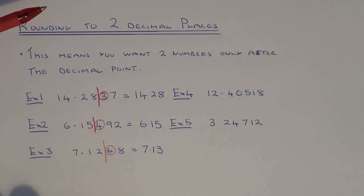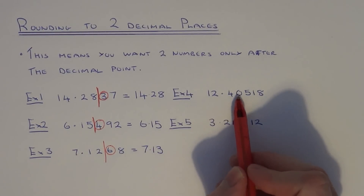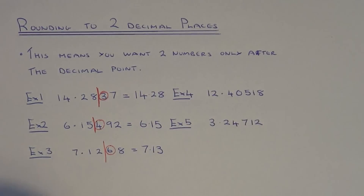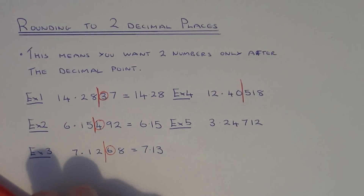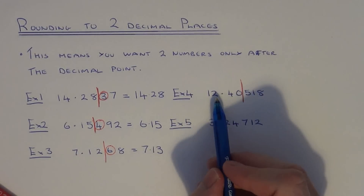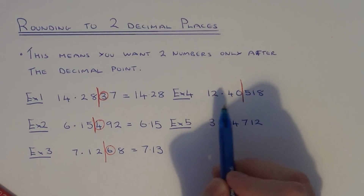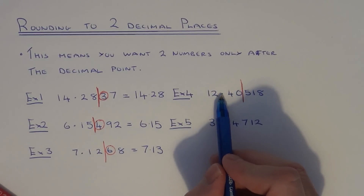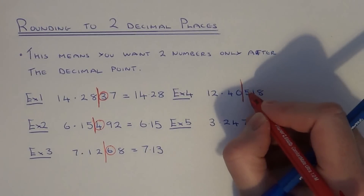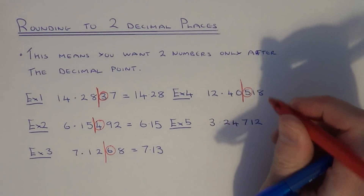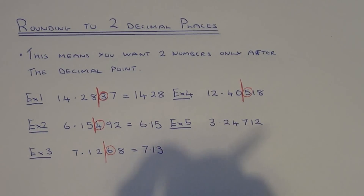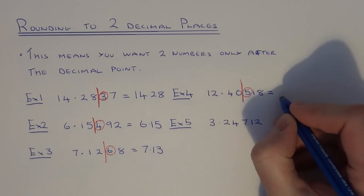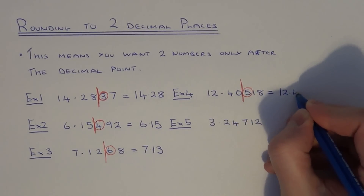Let's move on to example four. This time we have 12.40518. We're rounding it off to two decimal places, so two numbers after the decimal point. Two options: 12.40 if we round down, or 12.41 if we round up. Just look at the number after the line — that's a five. If it's five or above, you always round the number up, so our final answer will be 12.41.